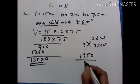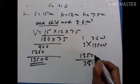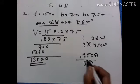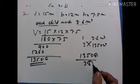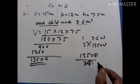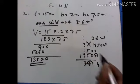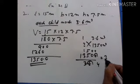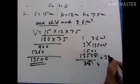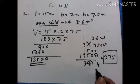1350 divided by 3.6 — shift the decimal point to the right: 13500 divided by 36. Performing the division gives 375. So 375 children can be accommodated in this room.